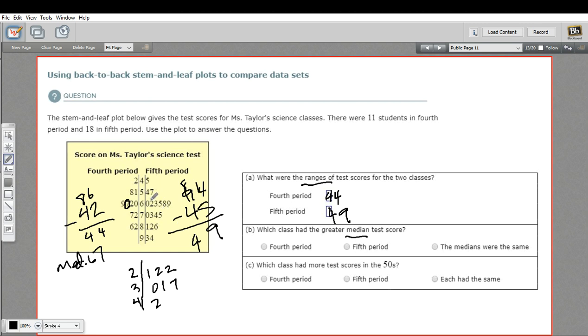Counting from the bottom and top to find the middle values. Okay, so it's this value and this value that are in the middle. So that's 69 and 70. You average those, you get 69.5. So the median would be 69.5 here. So which class had the greater median score? That's fifth period. Although the medians weren't that far apart, 67 and 69.5.